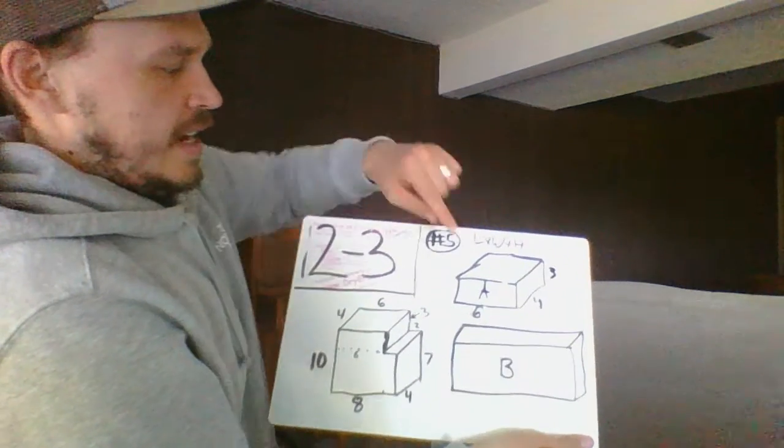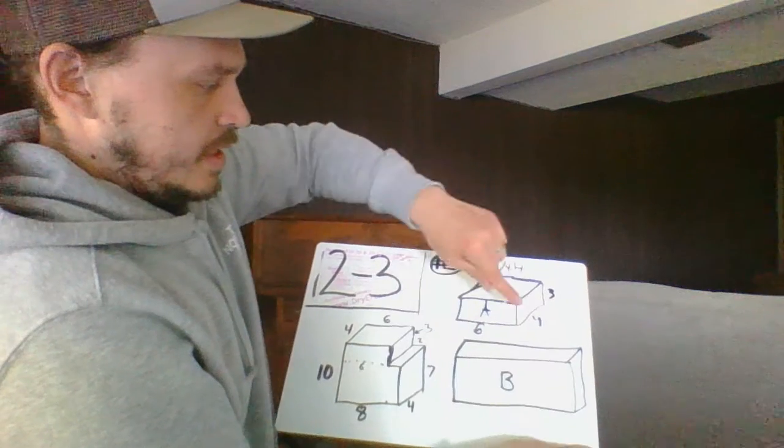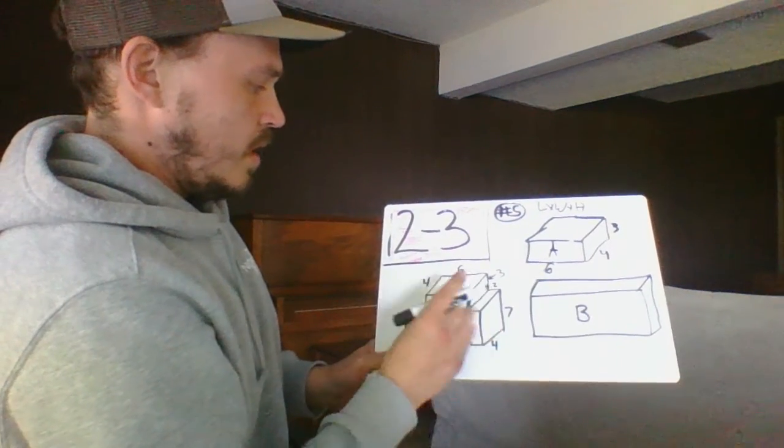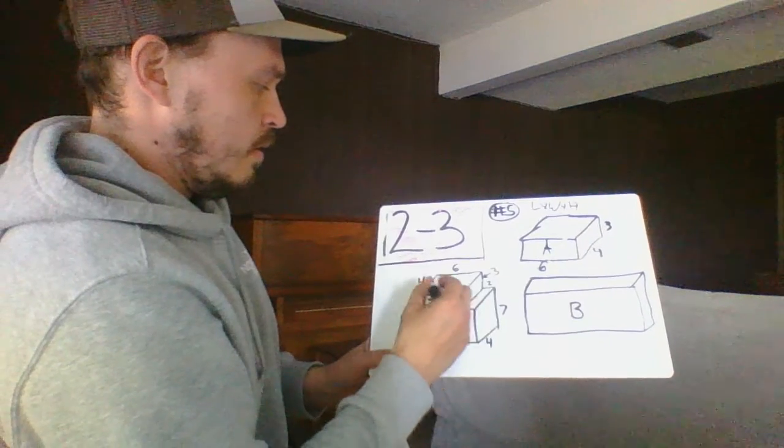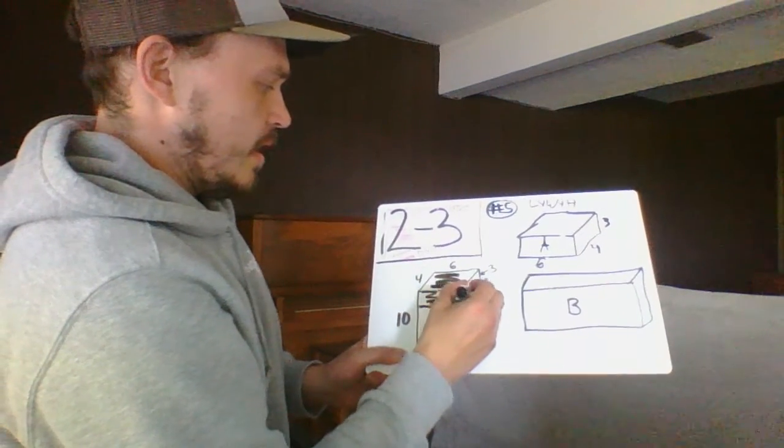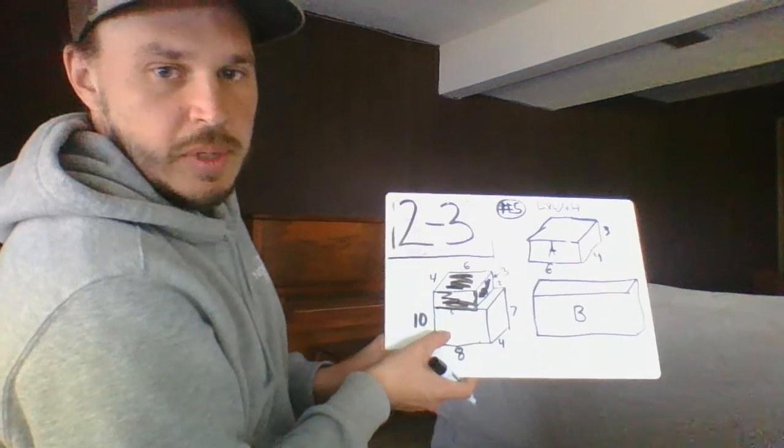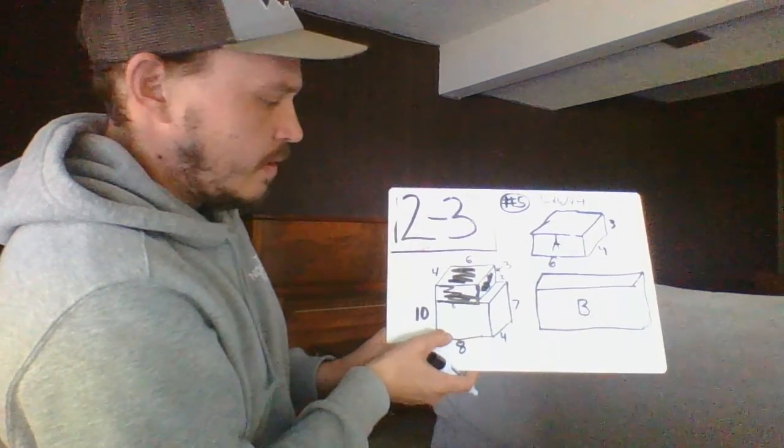So I know that A is going to be six times four times three. Now I used all that. I found that rectangle. So I'm gonna call the bottom part B, the bottom Christmas present, I think of it.